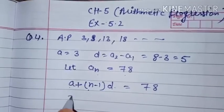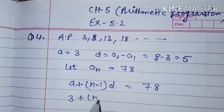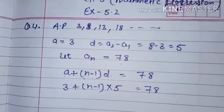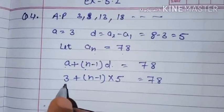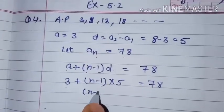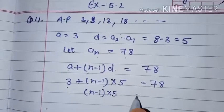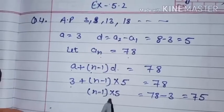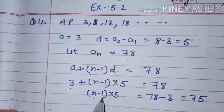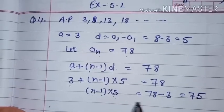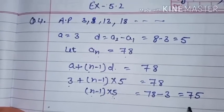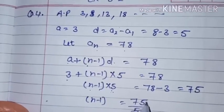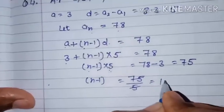So A is 3, plus (n minus 1) into D, which is 5, equals 78. To solve this equation, take 3 to the right hand side: (n minus 1) into 5 equals 78 minus 3, which gives 75. Now take 5 to the right hand side as division: n minus 1 equals 75 by 5, which is 15.